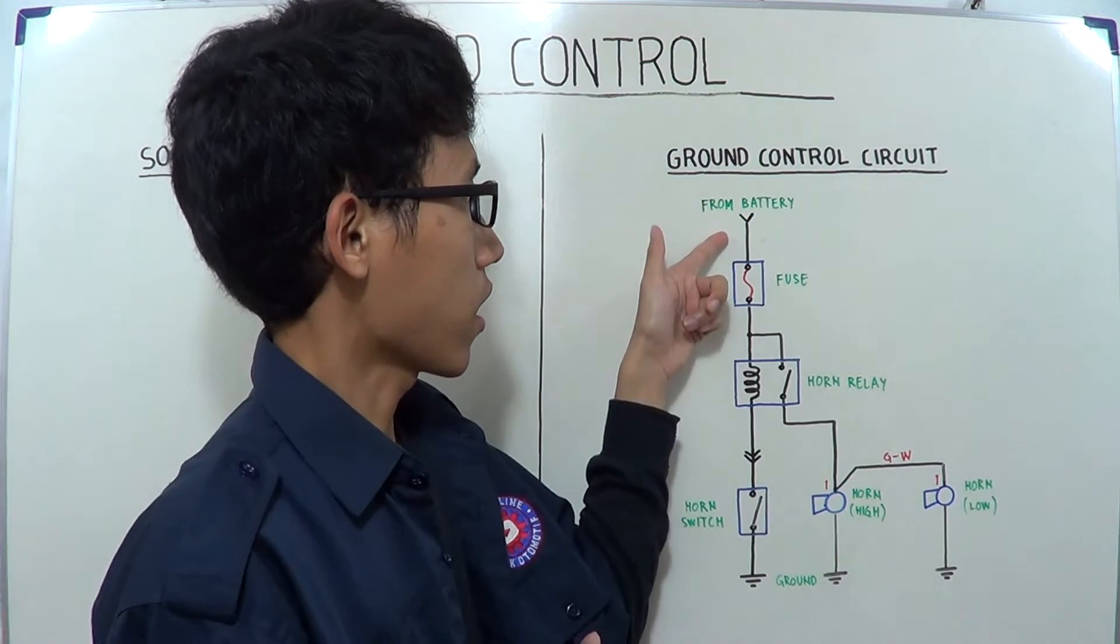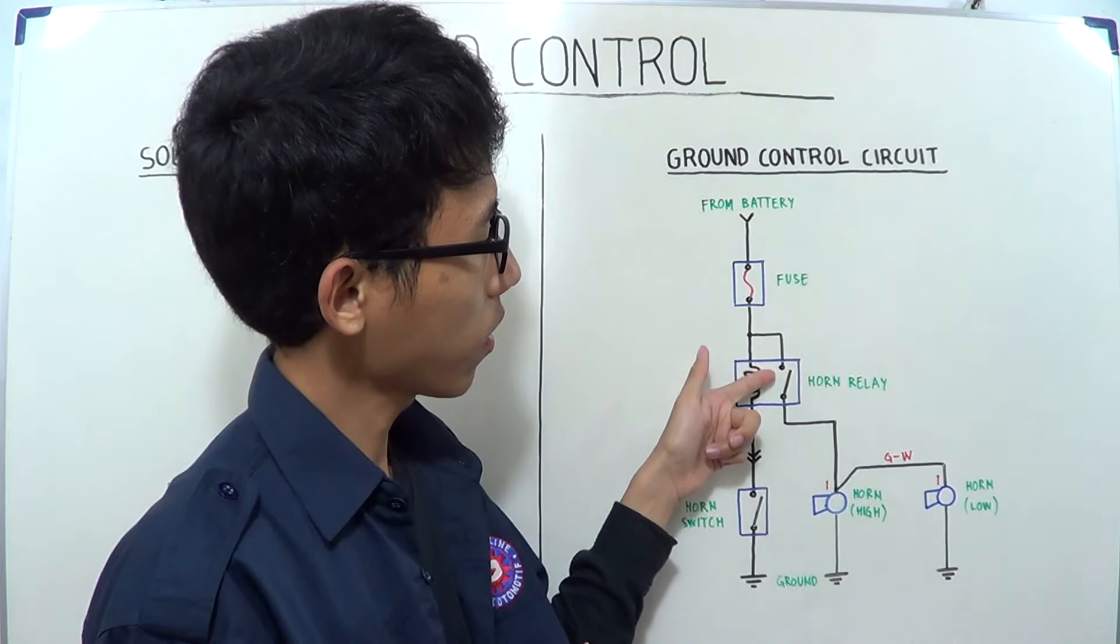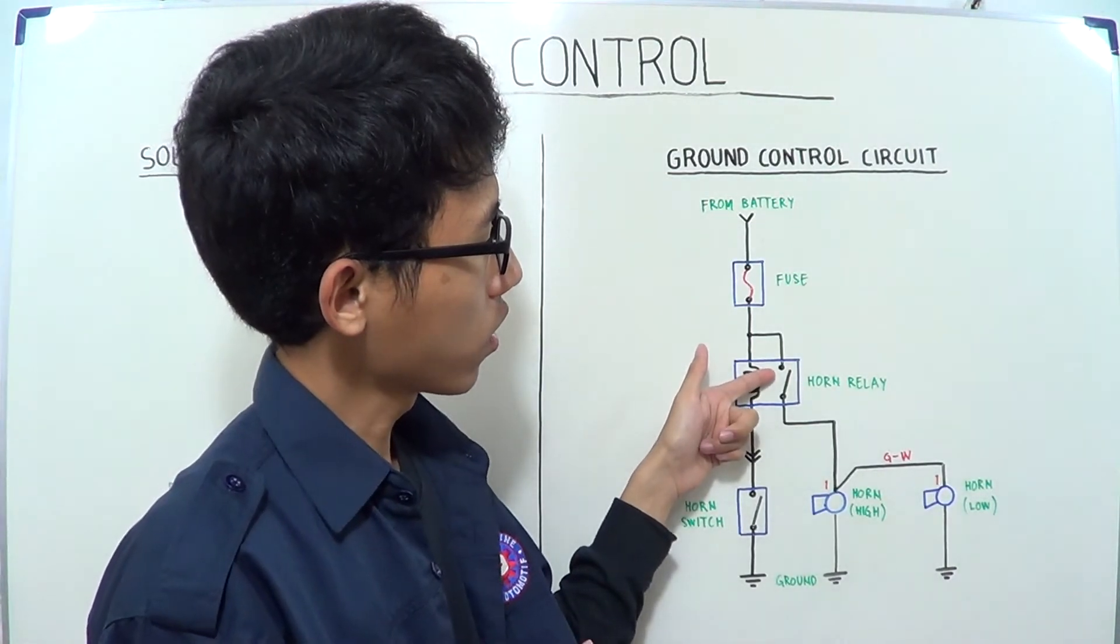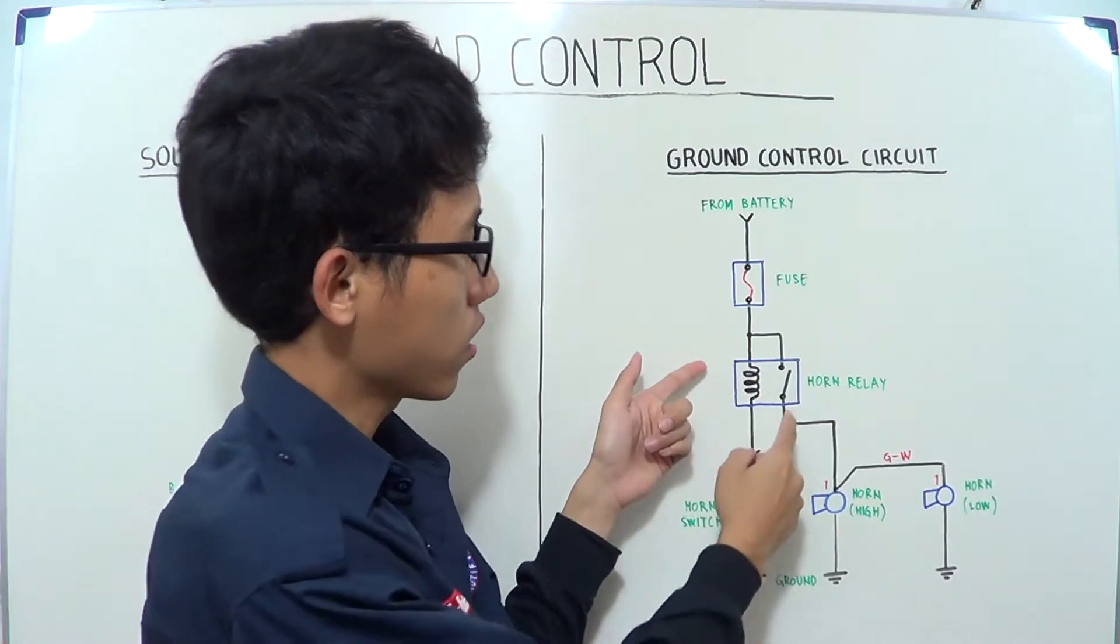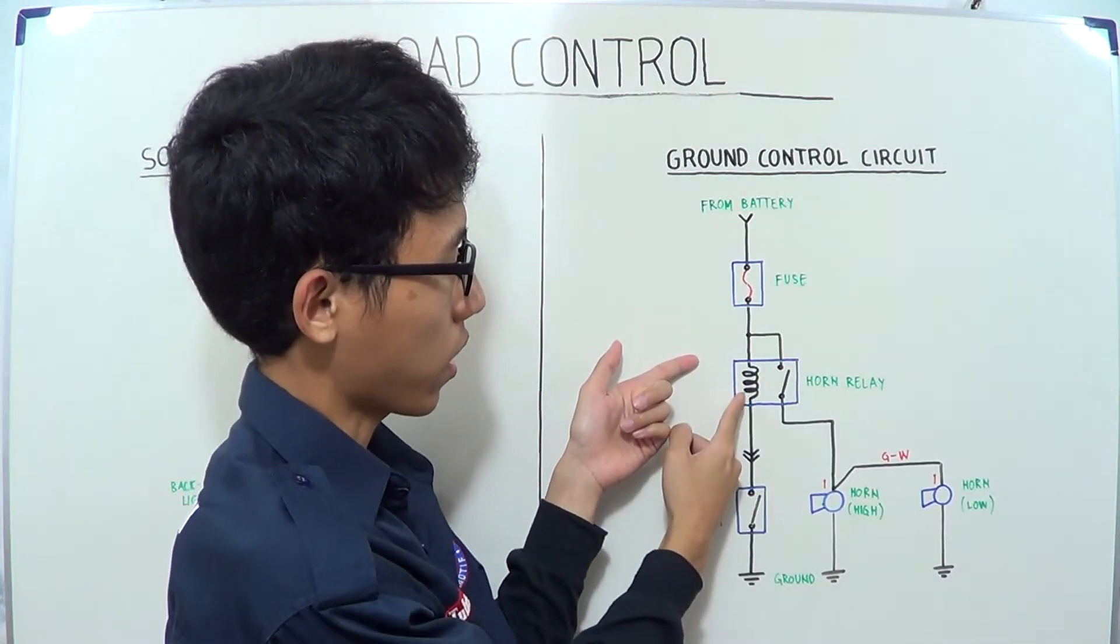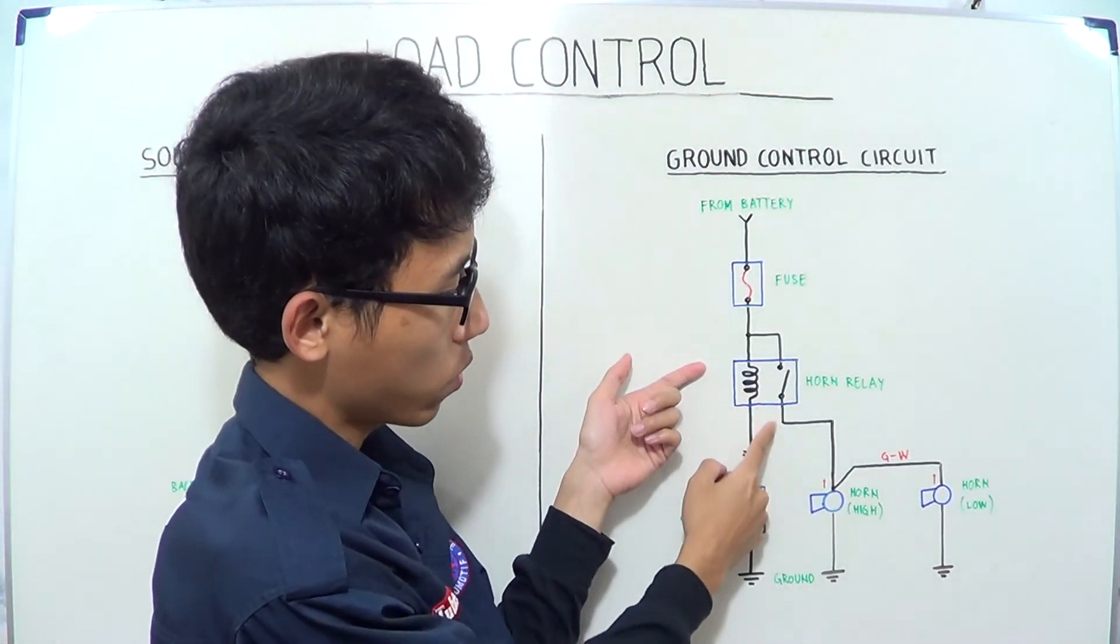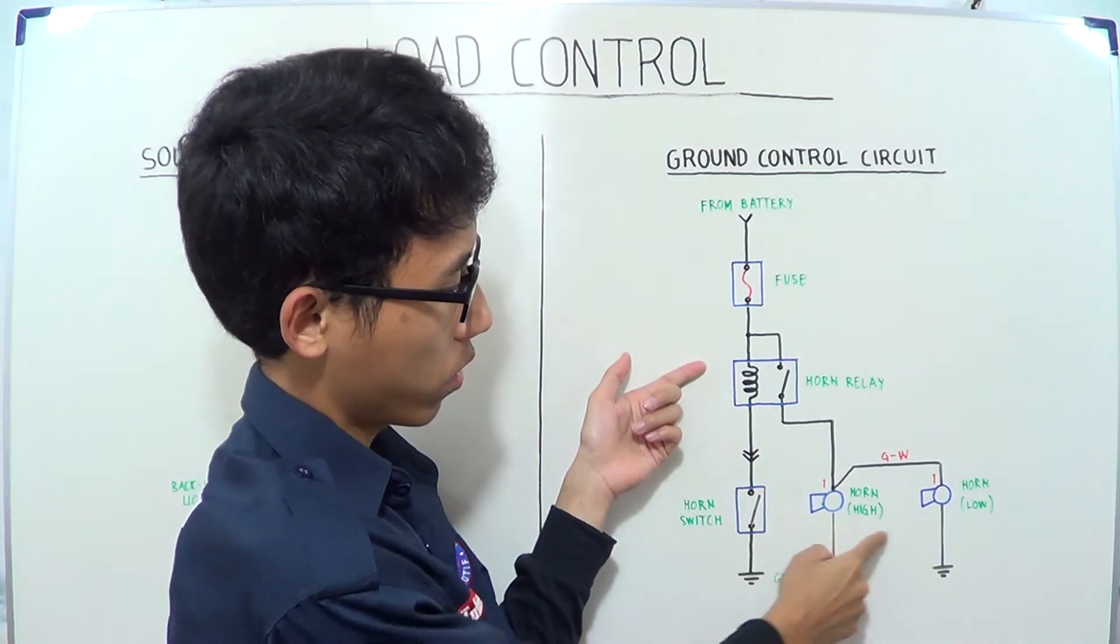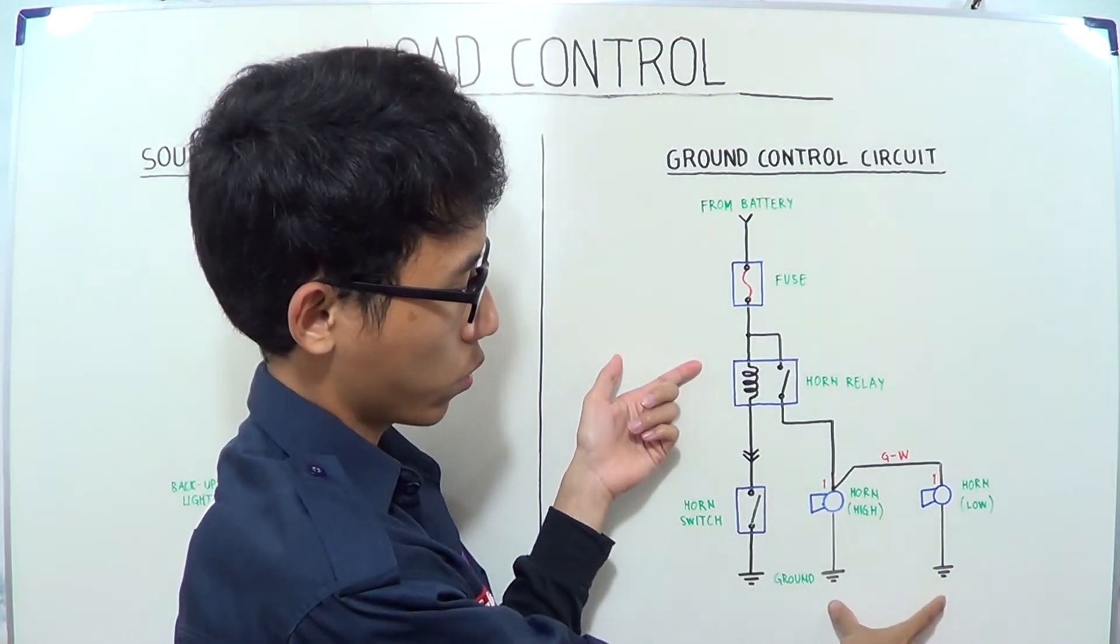Consequently, on the other side, the electric current from the battery also flows to the switch of horn relay because the switch of horn relay is pulled by the electromagnet of horn relay. Consequently, the electric current flows to both low and high horn and to the ground.